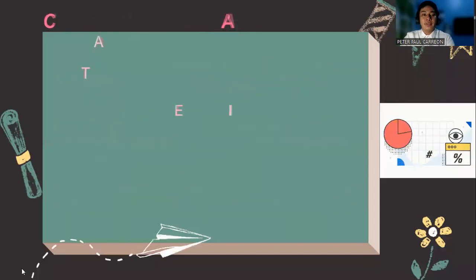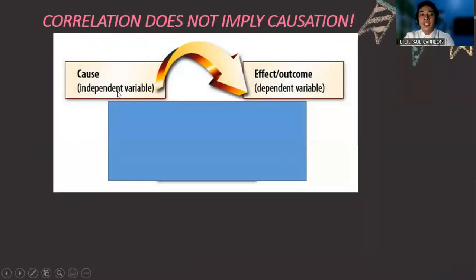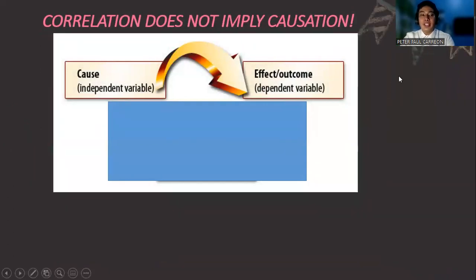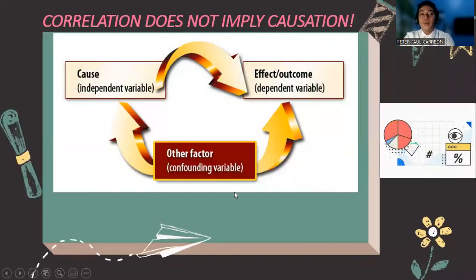That is why many think correlation is about causation, meaning the independent variable affects the dependent variable. But correlation does not imply causation. The independent variable could also be dependent, and the dependent could also be independent, so it is vice versa. Both factors should be confounding variables. One affects the other, and the other also affects the other.